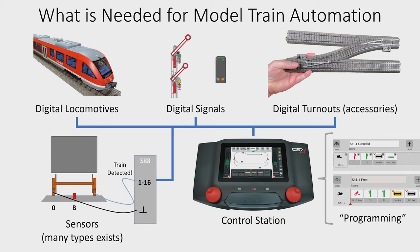Then the control station would know that, and it would know it has to stop the locomotive at platform one and do that. In the same fashion, when the control station wants to have the train depart from platform one, it will first set the turnout so the train comes from platform one out to the main track, and then set the signal to green so the locomotive can run.